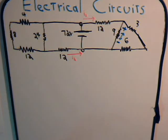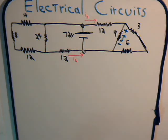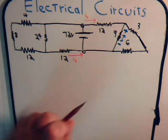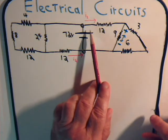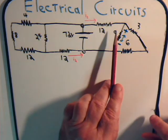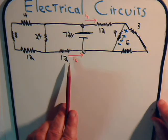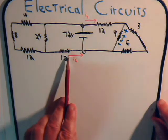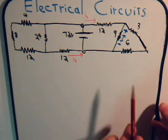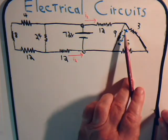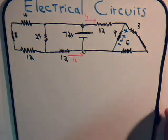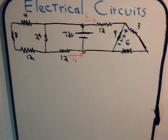Here we want to determine what is the amount of current that flows into this 12 ohm resistor. Likewise, we want to determine what is the amount of current that flows out of this 12 ohm resistor, and what is the voltage drop across this 9 ohm resistor.